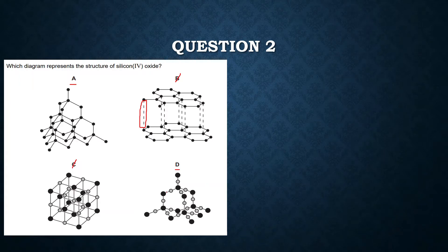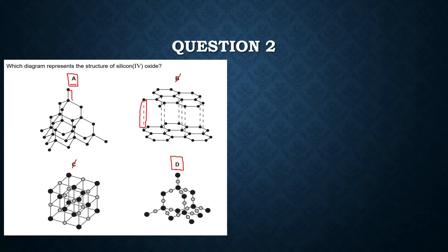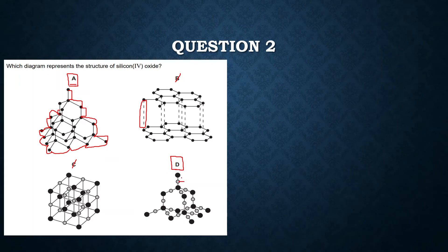Options A and D look somewhat similar but are different. Option A is diamond, because all the atoms shown are the same — in diamond there is only the carbon atom. In option D you can see small atoms and bigger atoms, indicating two different elements, so this is silicon oxide. The answer is D.